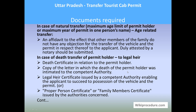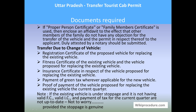Also required for death transfer: a copy of the letter in which the death of the permit holder was informed to the respective authority, and a legal heir certificate issued by the respective authority enabling the applicant to succeed and take possession of the vehicle and the permit. Alternatively, a proper person certificate or family member certificate issued by the authority may be provided, along with an affidavit stating that other family members have no objection to transferring the vehicle and permit to the applicant's name, attested by a notary.